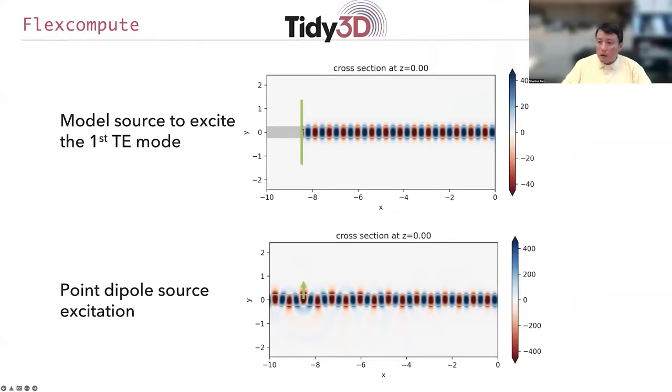You can see that the field is perfectly launched to the right of the source and there's exactly zero field to the left of the source.